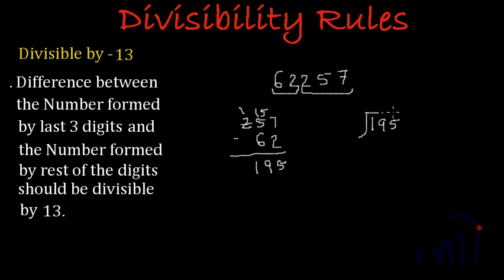So if I divide 195 by 13, 13 ones are 13. 9 minus 3 is 6. 1 minus 1 is 0. Then I have to note this 5 down. And since we have a 5 over here, I think it will go 5 times. 3 times 5 is 15. 5 times 1 is 5 plus 1 is 6. 13 times 5 is 65. So we have got remainder 0.